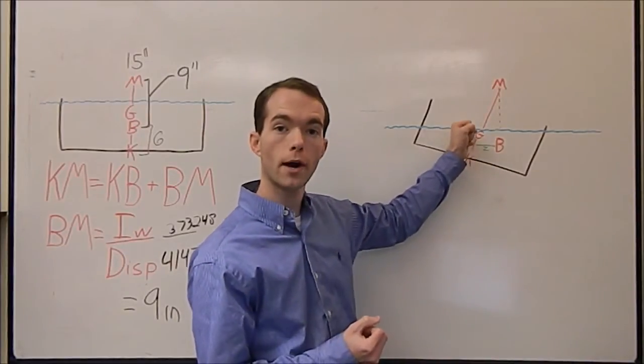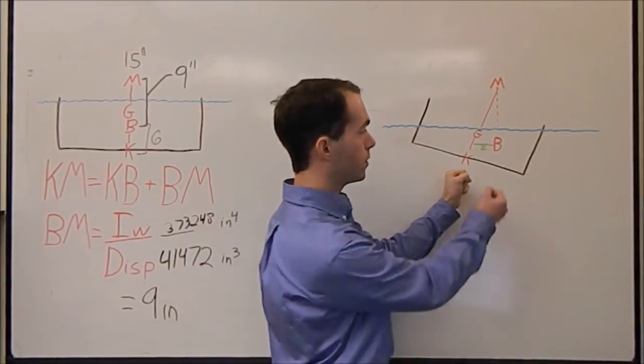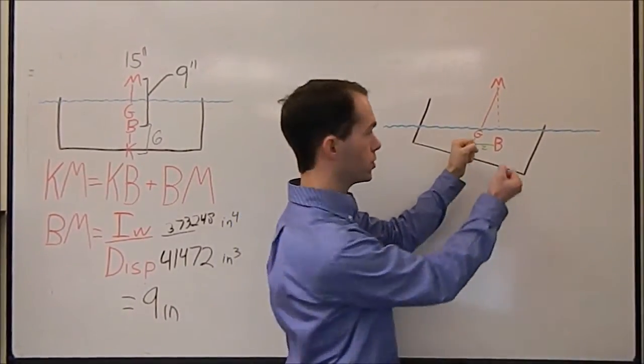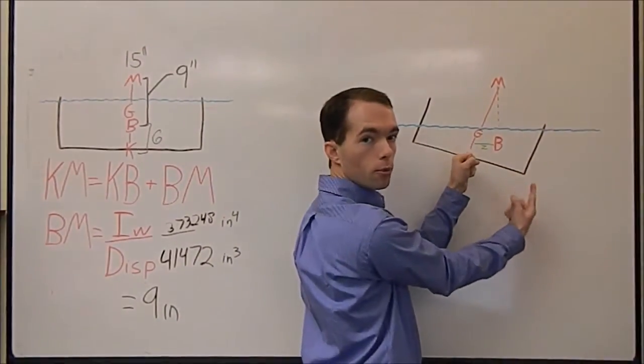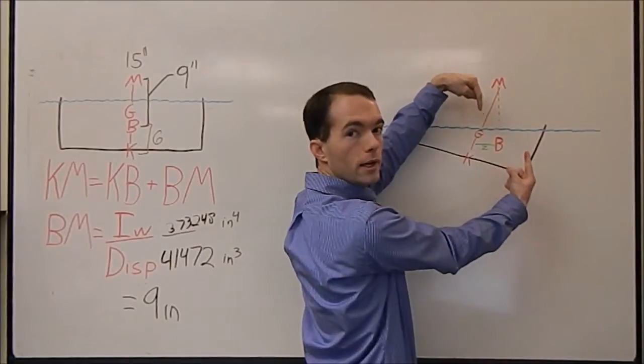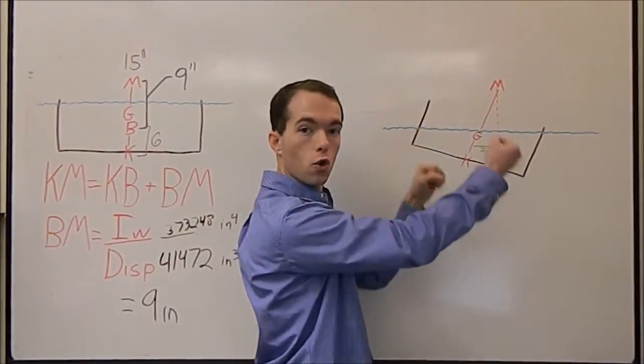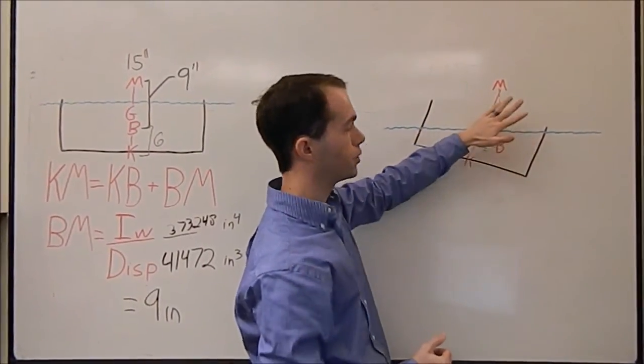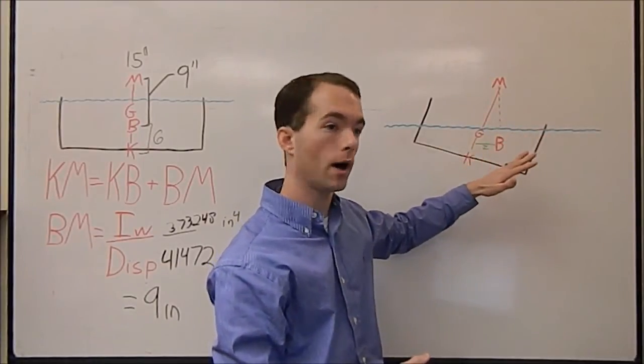If you imagine it like this, your center of gravity is here trying to pull down. Well, the center of buoyancy is an upward force. So, you've got buoyancy over here pushing up, center of gravity pulling down, and that causes a torque that's going to right your boat back level. Which is exactly what we want.